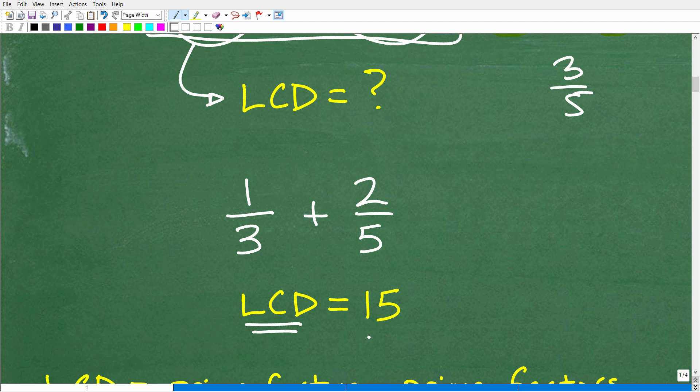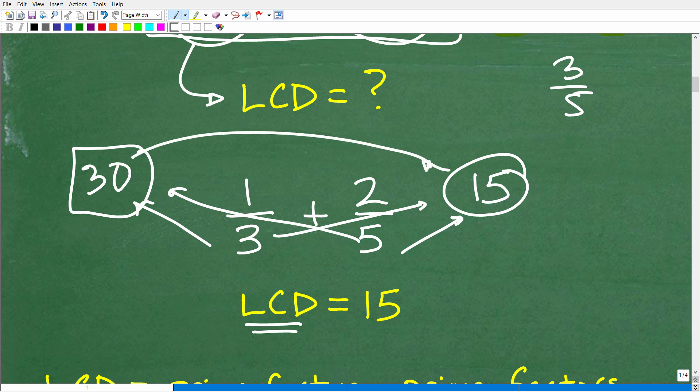Now, one way to think of the LCD is the lowest number that both of these numbers divide into. So what's the lowest number that both three and five can divide into evenly without a remainder. So five goes into 15 and three goes into 15 without a remainder, but they also go into 30, right? We can divide three into 30 without a remainder, and we can also divide five into 30 without a remainder, but this is not the lowest number. 15 is the lowest number. So this is another kind of good way to think of what the LCD is, but the LCD has a very specific definition to it, right? Let's get into this right now.